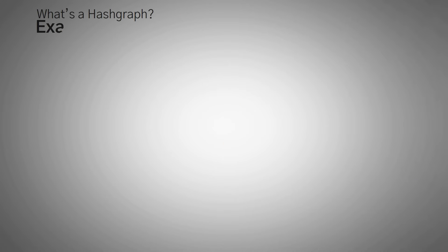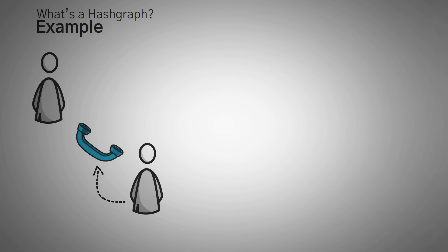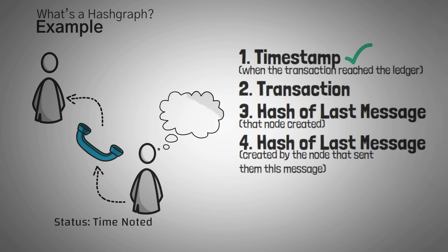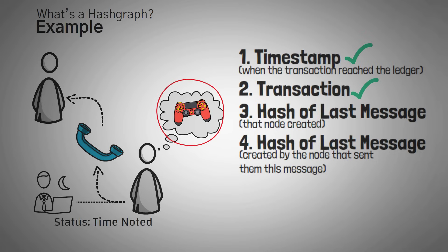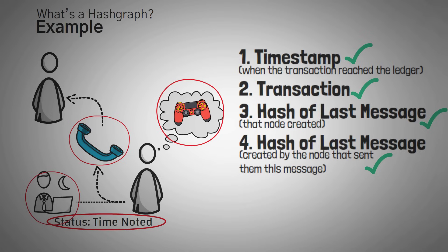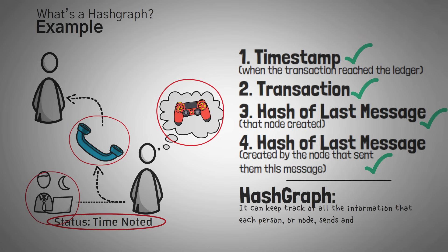As an example, think about a phone call as an event. If you call your friend, the phone tracks when you received that call. Then you tell your friend about an awesome new video game you bought — that's the transaction content. You also tell them you called your brother first, so your friend now knows four things: what time you called, what your message was, who you talked to before them, and what they did before you called. This is basically what a Hashgraph does — tracking all this information for each node.